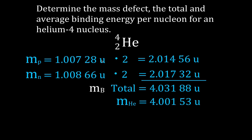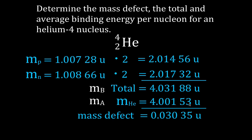You'll notice, because this is the mass afterwards, the mass afterwards is less. This is 3188 and this is 0153, so there's a difference in the mass. And that difference in the mass is what we call the mass defect.